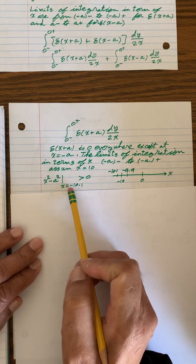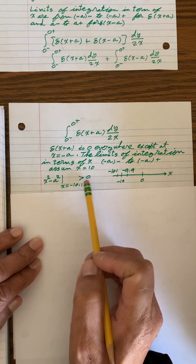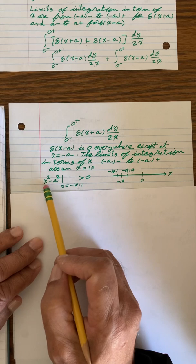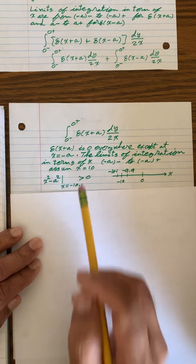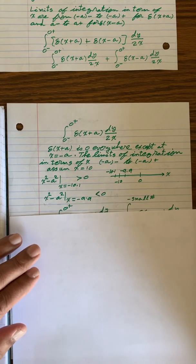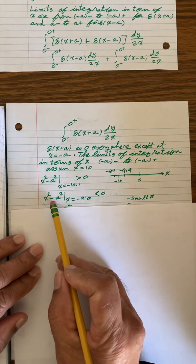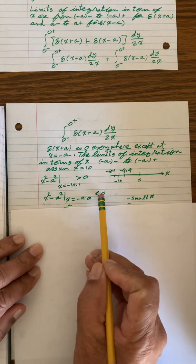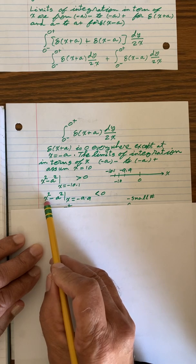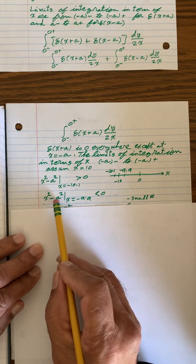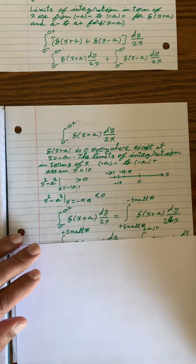So if we evaluate x squared minus a squared, at minus 10.1, it's going to be a little bit more than 0, because minus 10.1 squared minus 10 squared is a positive number. And here, on the right side, this will be a little bit less than 0, because minus 9.9 squared minus 10 squared, that's less than 0. So what happened,